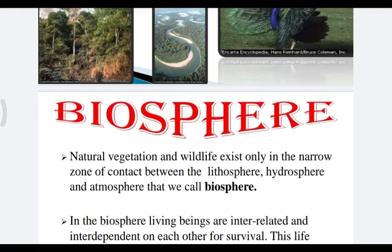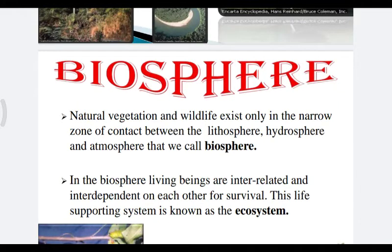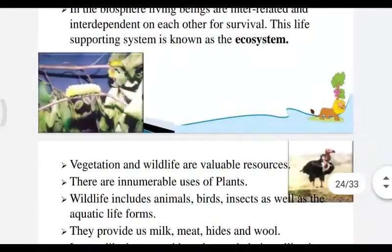Natural vegetation and wildlife exist only in the biosphere. In the biosphere, living beings are interrelated and interdependent on each other for their survival. This life-supporting system is known as the ecosystem. The ecosystem is a life-supporting system in which living beings are interrelated and interdependent on each other for their survival.